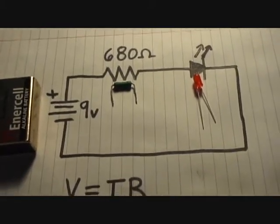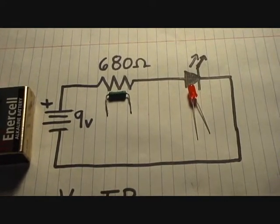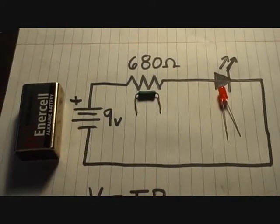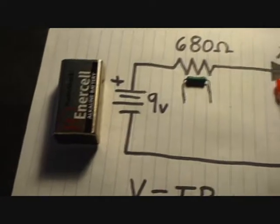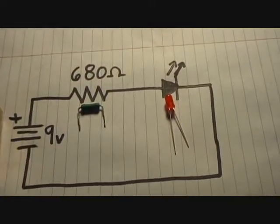This is the basic setup. I've drawn the circuit, and your three basic components are going to be a battery, a resistor, and an LED.